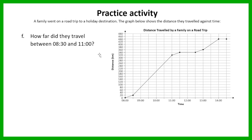Question: how far did they travel between 8:30 and 11 o'clock? We have to look at how far they had already traveled by 8:30 — at 8:30, they had already traveled 20 kilometers. So we're going from 20 up to how far they had gone by 11 o'clock, which is 320. We take the higher value of 320 and subtract the lower value of 20, and that gives us 300 kilometers traveled from 8:30 until 11.